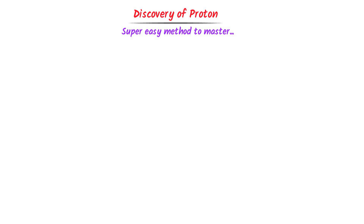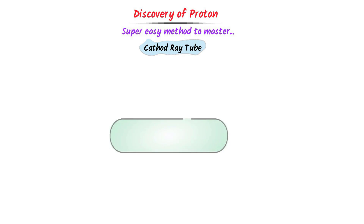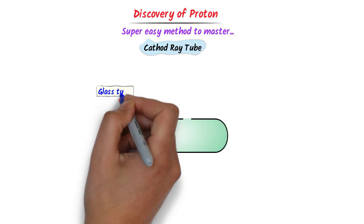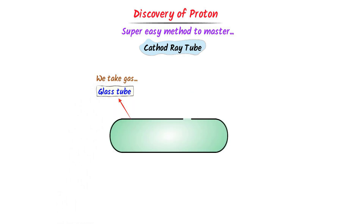First of all, we will learn about the cathode ray tube. The cathode ray tube contains five parts. The first part is a glass tube. We take a gas in it, like hydrogen gas. Remember that hydrogen gas helps electrons flow smoothly in the tube.